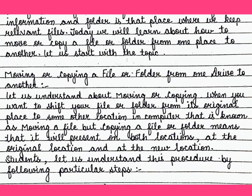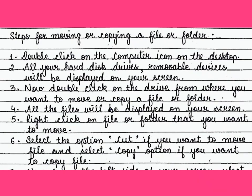Let us understand this procedure by following particular steps. Steps for moving or copying a file or folder. Number 1: Double click on the computer icon on the desktop. Number 2: All your hard disk drives and removable devices will be displayed on your screen. Number 3: Now double click on the drive from where you want to move or copy a file or folder. Number 4: All the files will be displayed on your screen. Number 5: Right click on the file or folder that you want to move. Number 6: Select the option cut if you want to move the file, and select copy option if you want to copy the file.